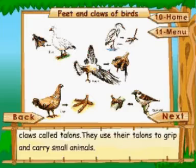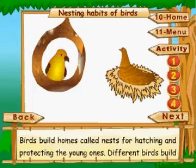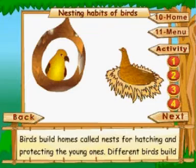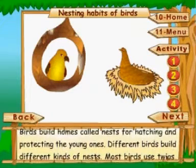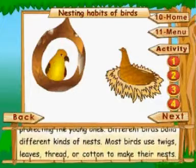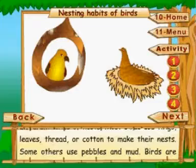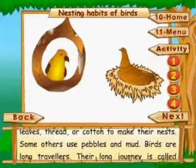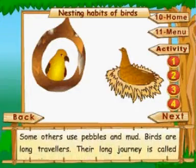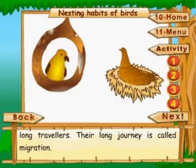Eagles and hawks have sharp curved claws called talons, which they use to grip and carry small animals. Birds build homes called nests for hatching and protecting their young ones. Different birds build different kinds of nests using twigs, leaves, thread, cotton, pebbles, or mud. Birds are long travelers, and their long journey is called migration.